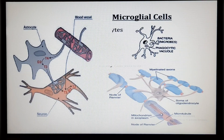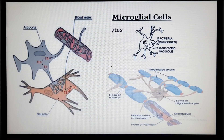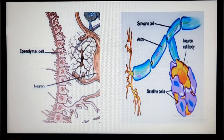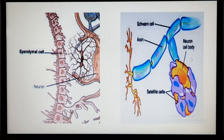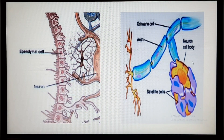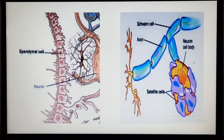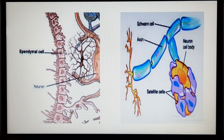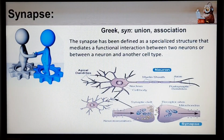Oligodendrocyte cells are glia that wrap their flat extensions tightly around nerve fibers, producing a fatty insulating covering called the myelin sheath. Ependymal cells are glial cells that line the central cavities of the brain and spinal cord. The beating of their cilia helps to circulate the cerebrospinal fluid that fills those cavities, forming a protective cushion around the central nervous system. Schwann cells form the myelin sheath around nerve fibers of the peripheral nervous system.